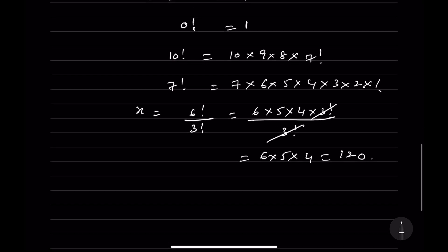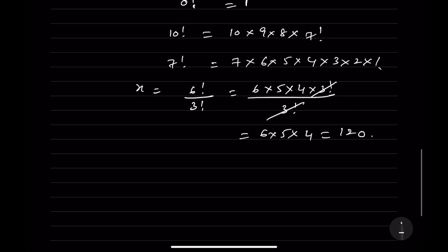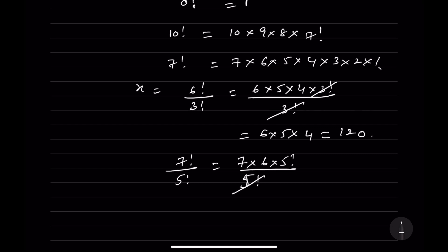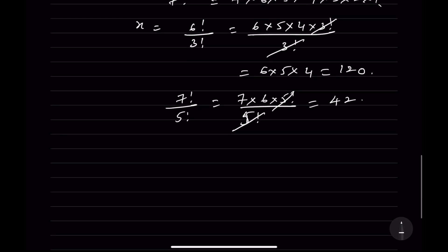Similarly, for 7!/5!, write it as 7 into 6 into 5! divided by 5!, the 5 factorials cancel, giving 7 into 6 which equals 42.